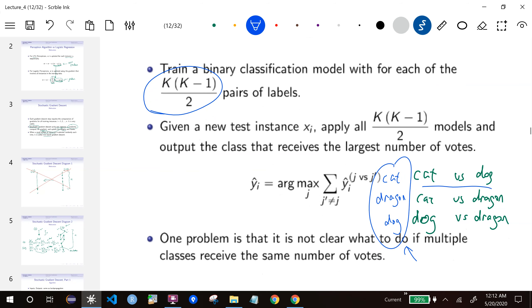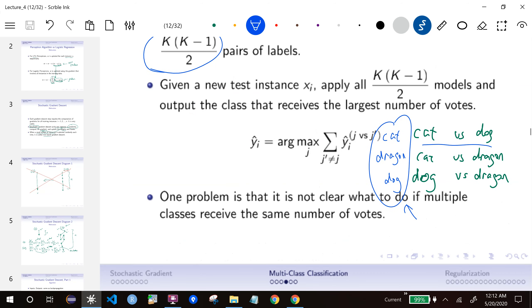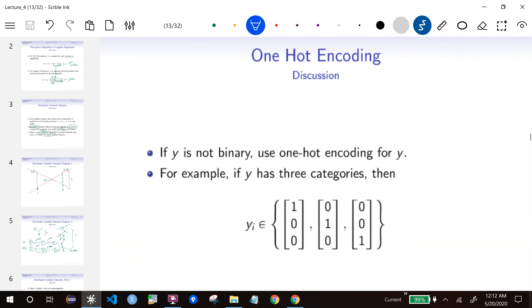So this is not great. We also have the problem of ties. If we have four of them, then we may have equal number of things voting cat and dog. So we do not know how to decide in those cases. That's not a good idea as well.